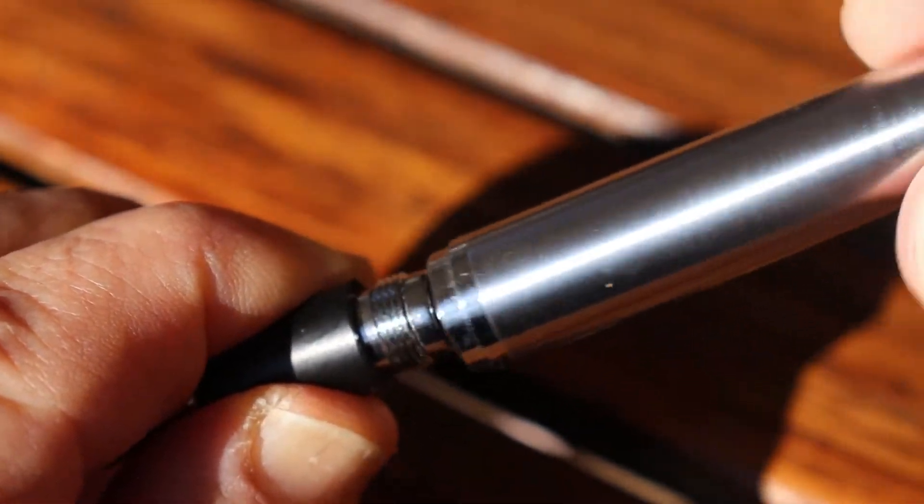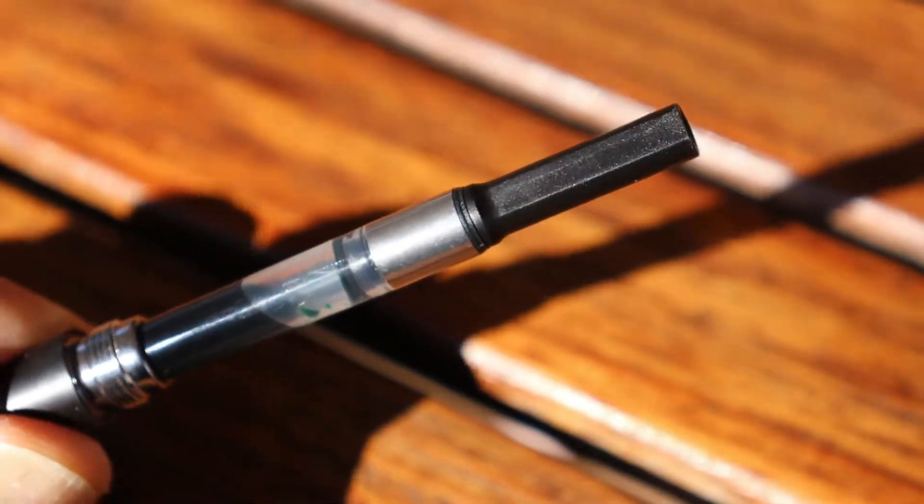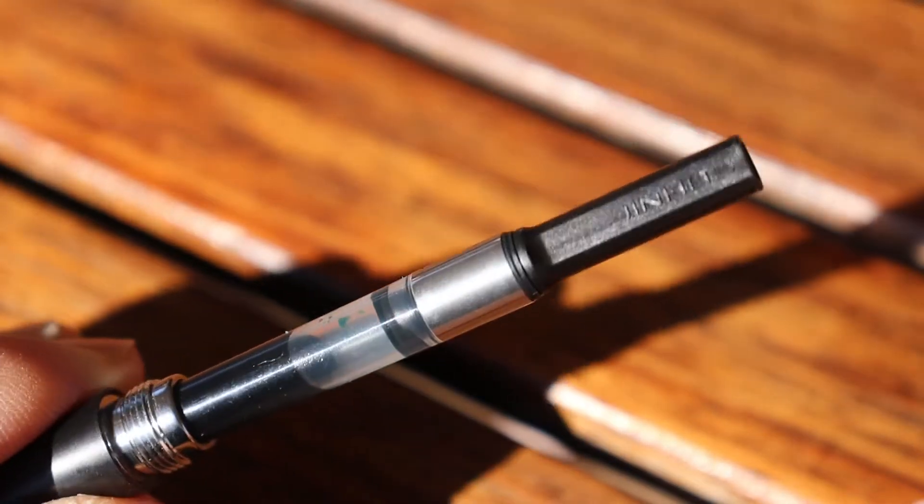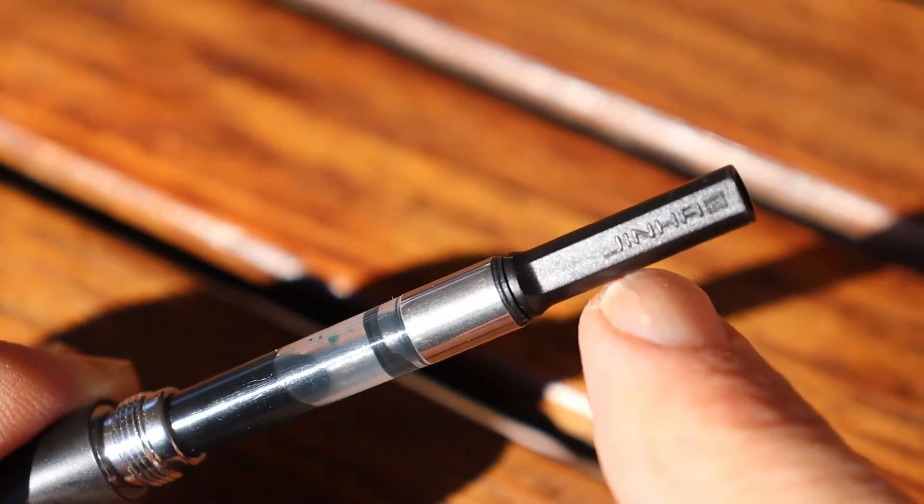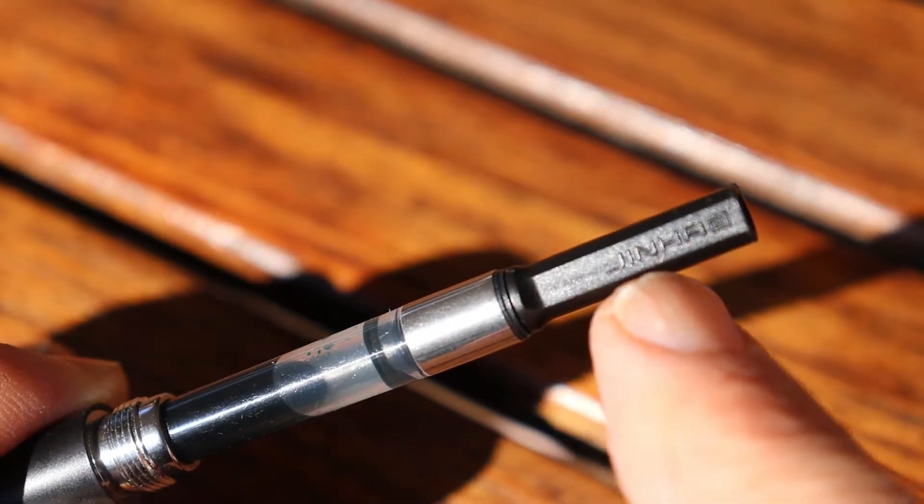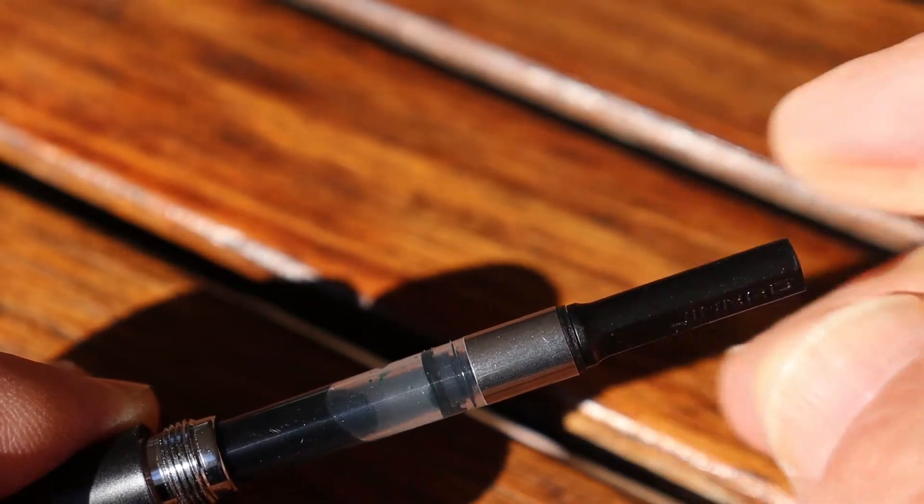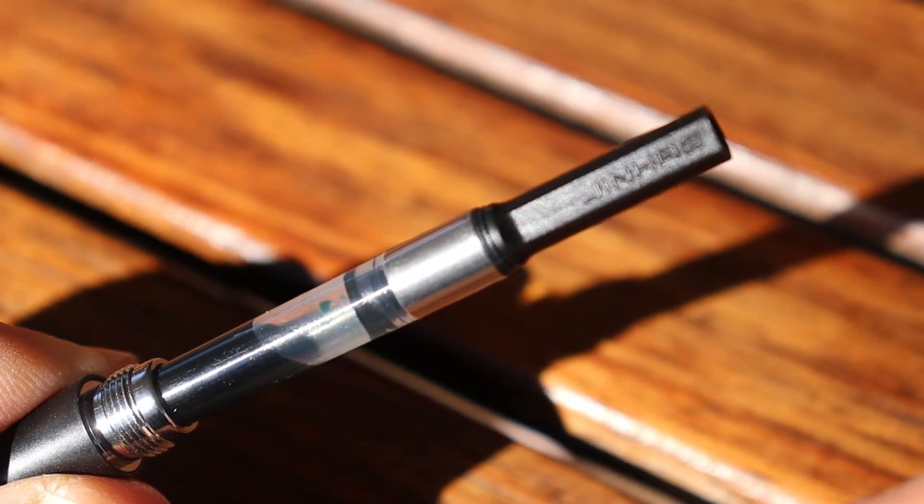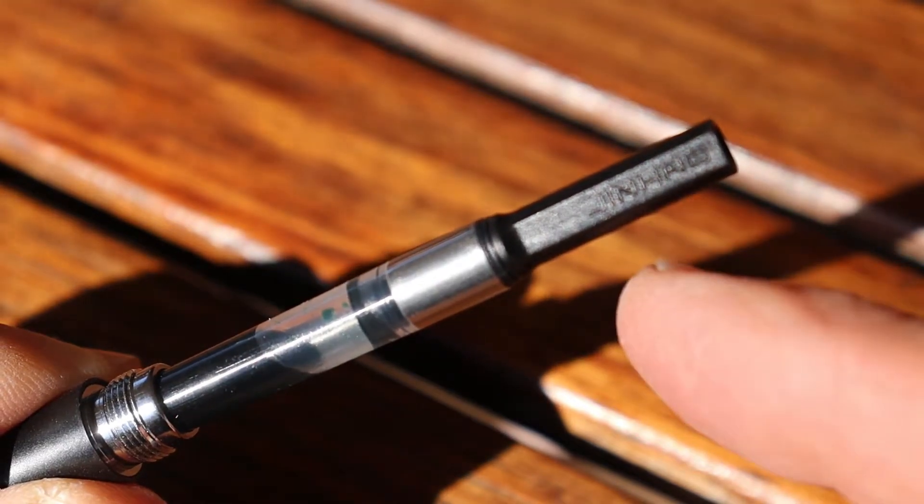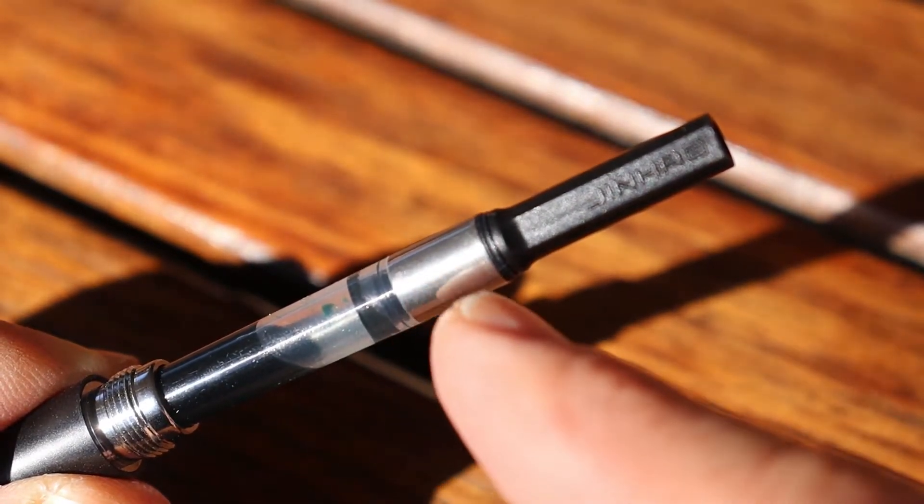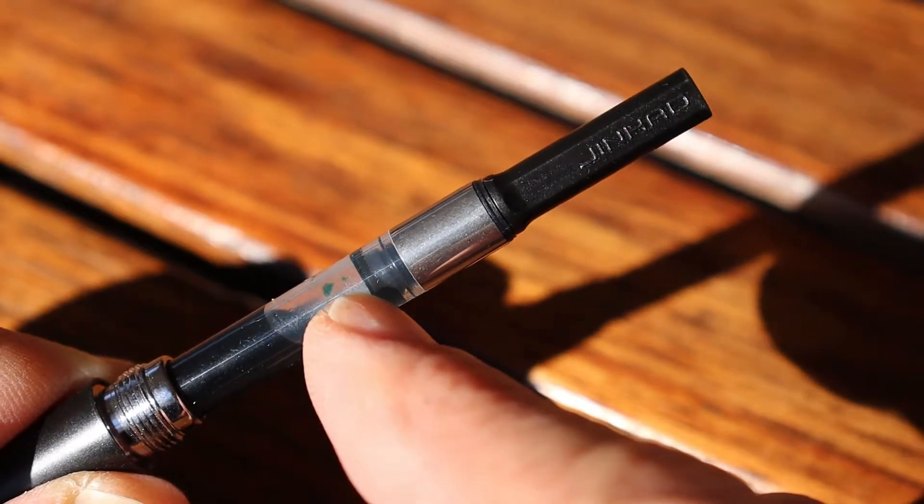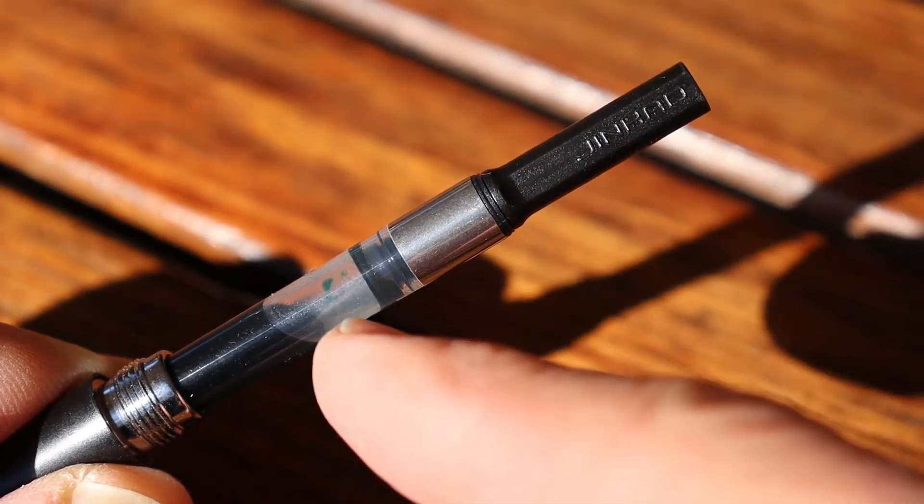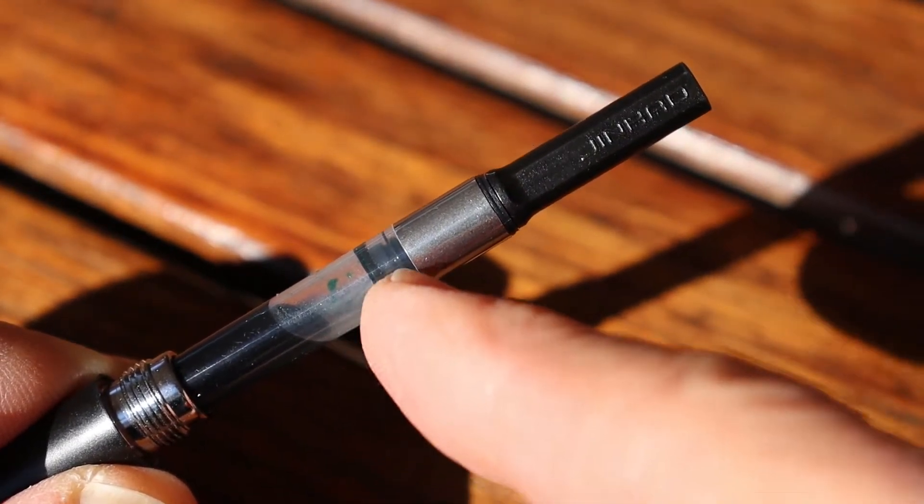Unscrew it and you have an international converter. Came with the converter, I got this from Goulet Pens. There you have the Jinhao. As I've mentioned before, I do appreciate when a pen company puts a converter in. These are inexpensive pens but they still put a converter in there, and this is a double wall converter. Some of them just put a single wall but Jinhao puts these converters in there that are double walls, so I appreciate that.